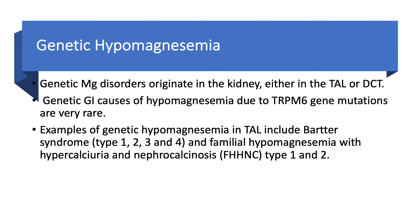If they originate in the kidney, they are either in the thick ascending limb or the distal convoluted tubule. GI causes of hypomagnesemia are due to TRPM6 gene mutations and are very rare. We said we have two channels, TRPM6 and TRPM7, through which we have absorption of magnesium in the small intestine. So if we have a TRPM6 mutation, we can have genetic hypomagnesemia because magnesium does not get absorbed, but this is very rare.